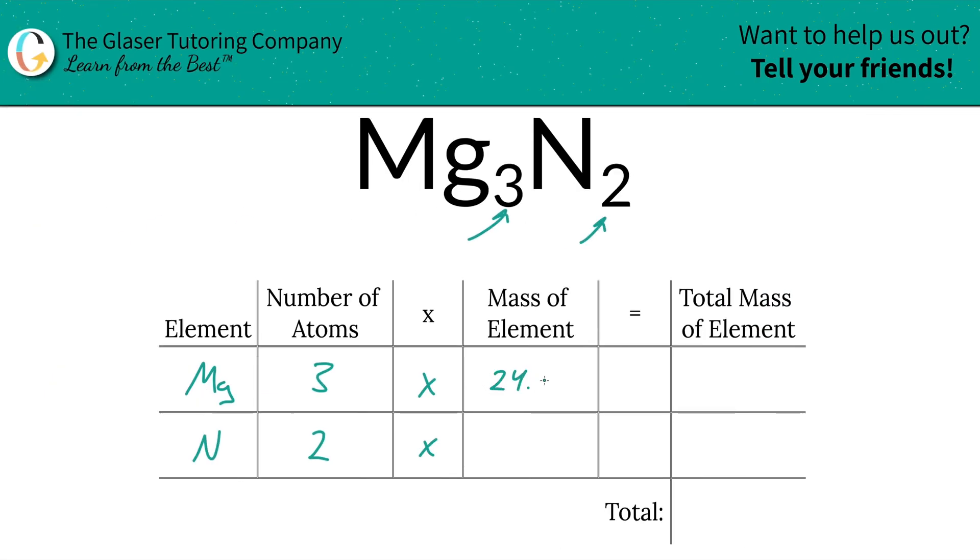So here we have 24.31 for magnesium and nitrogen was 14.01. Then to find the total mass of the element we simply have to just multiply this row across. So there's going to be 72.93 units of mass for magnesium and the nitrogen is going to be 28.02.